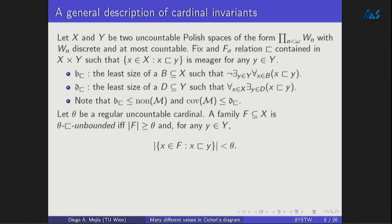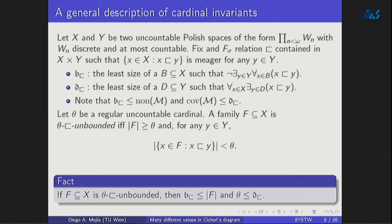For preservation, we are going to consider stronger families — not only bounded, but also with additional properties. We fix a regular uncountable θ. For a family of reals in X, we say that it is θ-unbounded if and only if it satisfies two requirements: first, that it has size ≥ θ, and second, that the set of objects from F that are dominated by a single y is small, for every y in Y. This is a strong version of unbounded. Any θ-unbounded family is unbounded, so we have that inequality. Dually, a θ-unbounded family destroys any small set of y's that tries to be a dominating family, so D(⊏) will be ≥ θ.